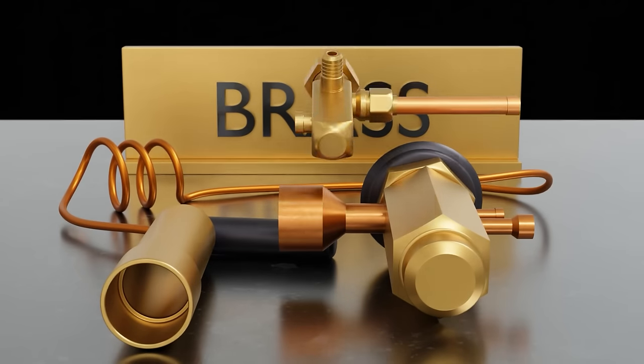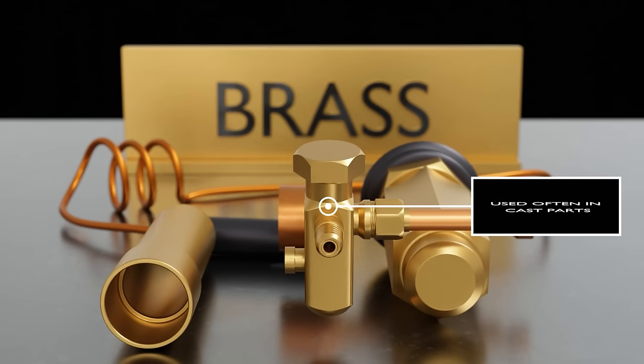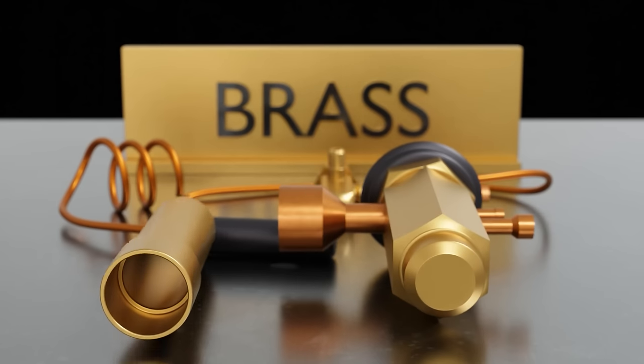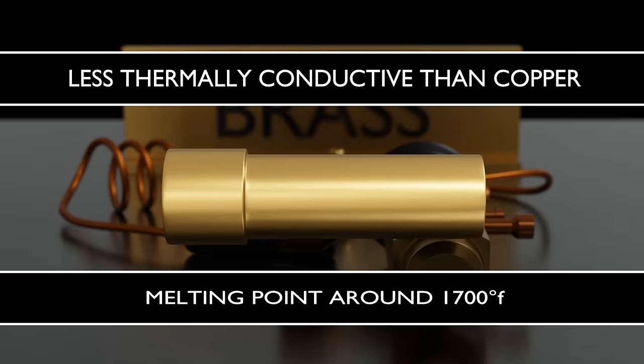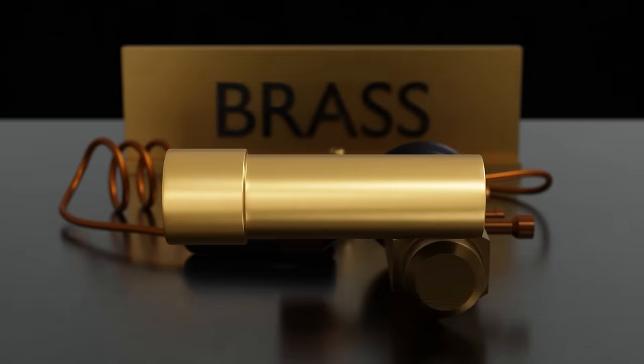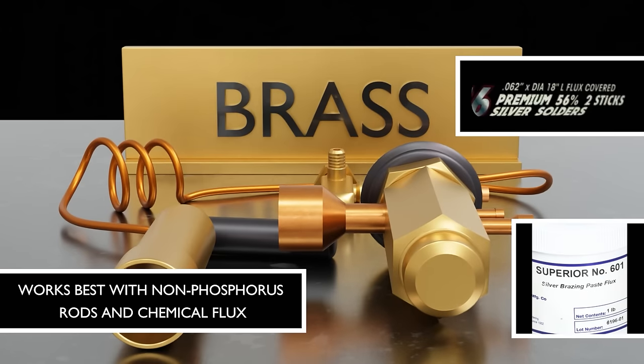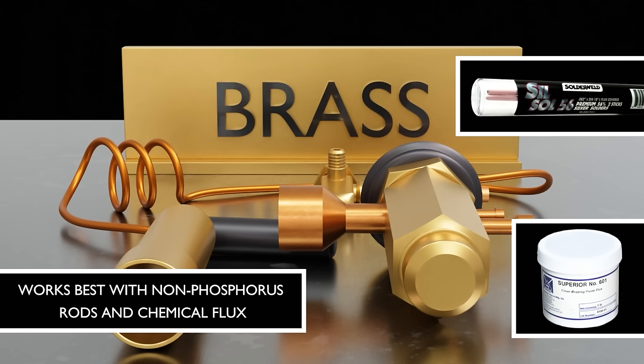Brass is a softer metal, and it's copper plus zinc, usually used in cast parts like valves. It's less thermally conductive than copper and has a lower melting temperature. When working with brass, it's best to work with non-phosphorus rods, like a 45% or 56% flux-coated, and work with a separate flux. You would generally be using a paste flux.